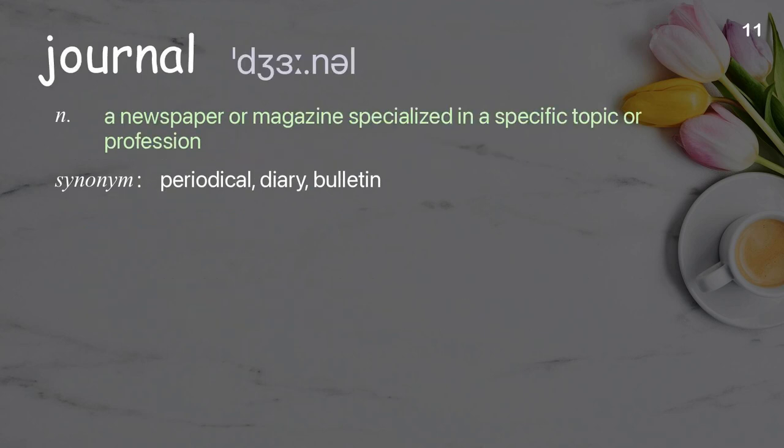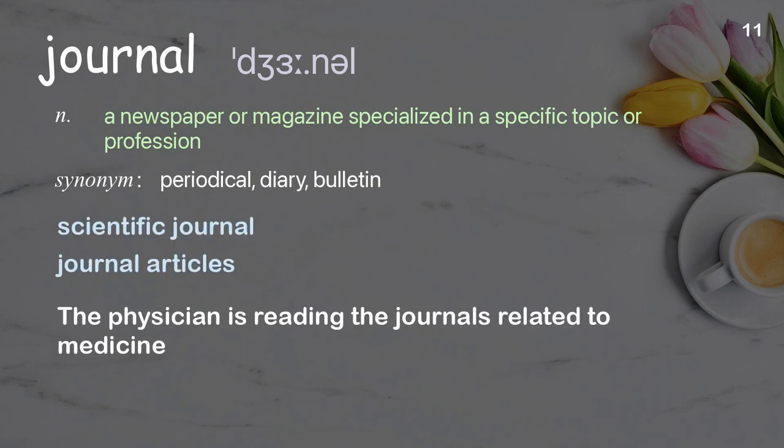Journal: a newspaper or magazine specialized in a specific topic or profession. Examples: the physician is reading the journals related to medicine.